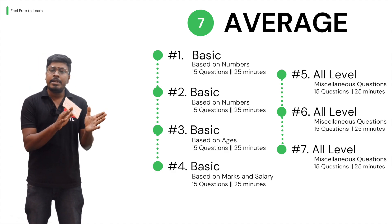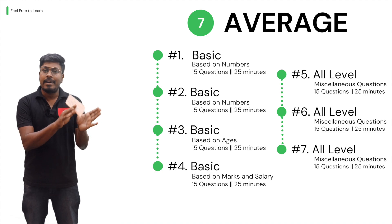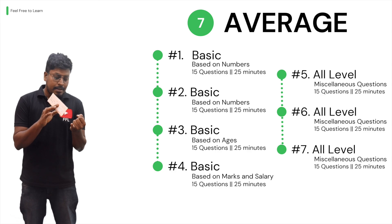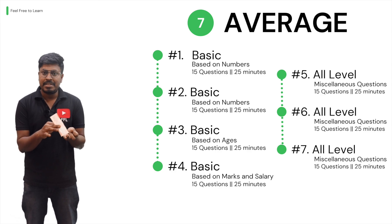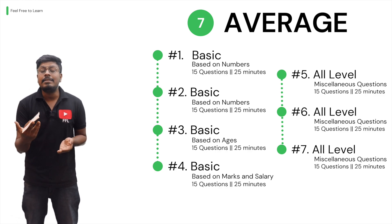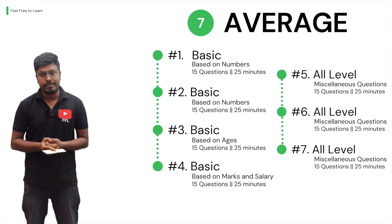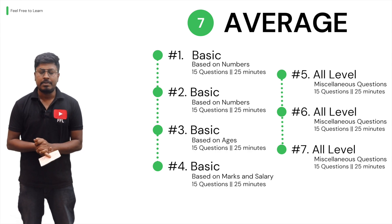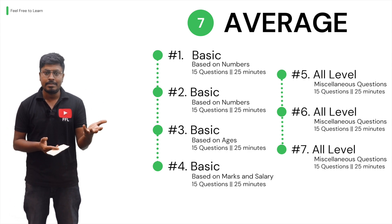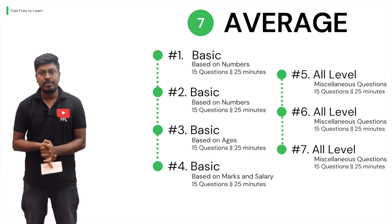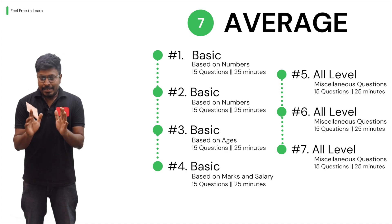Students who already bought the test series in the quantitative aptitude session can see six topics so far — for example, simplification, approximation, number series, wrong number series, and the sixth topic LCM and HCF. Today, according to the schedule, we are launching the seventh topic: Averages.